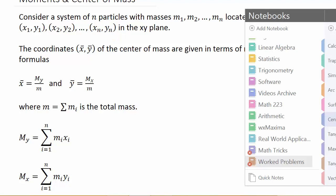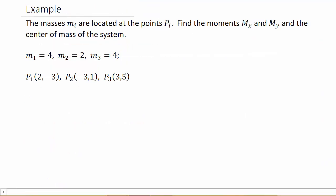Let's look at this example. Find the moments Mₓ and Mᵧ, and the center of mass. At the end of the video I'll show the points plotted so you can see a picture of it. The masses mᵢ are located at the points Pᵢ. We have m₁ = 4, m₂ = 2, m₃ = 4, with points P₁(2, -3), P₂(-3, 1), and P₃(3, 5).